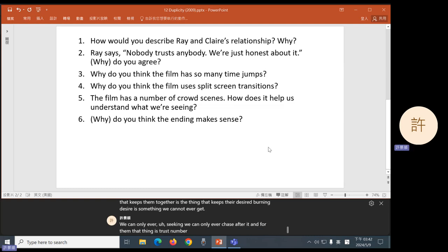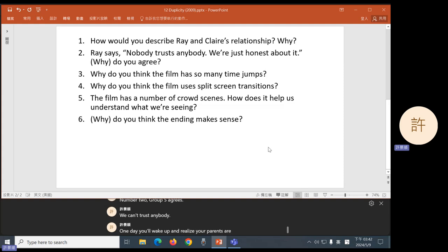Number two, group five agrees. We can't trust anybody. One day you wake up and realize your parents are also human. They might also make mistakes. You can't trust them 100% either. But you can't live your life without trusting anybody. So most of us pretend like we can trust people. Only these two crazy idiots never trust anybody.